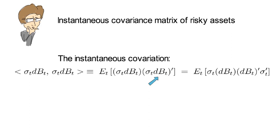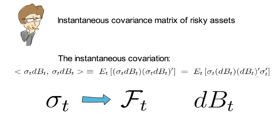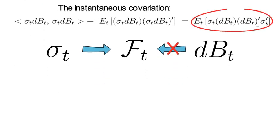Now you transpose the last part which gives you dB_t transpose times sigma_t transpose. Now as sigma_t is part of the F_t information set while dB_t is not, we can simplify the last expectation by taking the sigma_t out of the expectation.